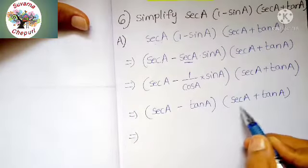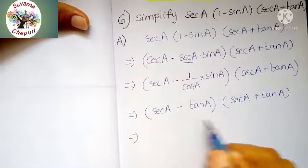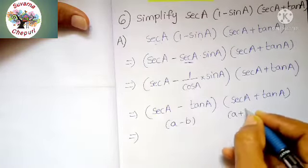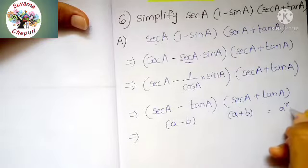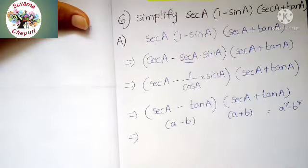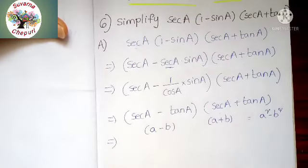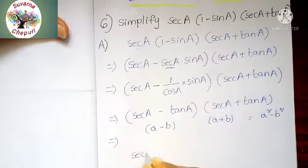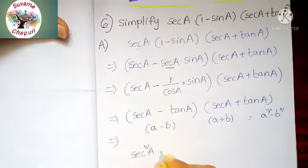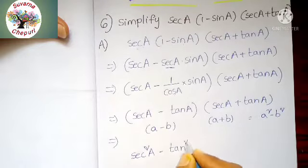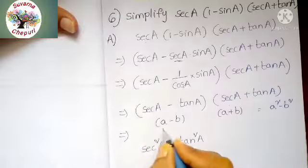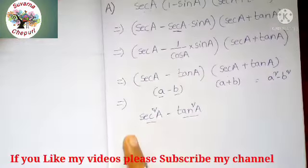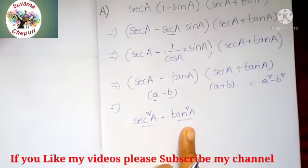Secant A minus tan A, into secant A plus tan A. It is in the form of A minus B into A plus B. The answer is A squared minus B squared. So by using that formula, write secant squared A minus tan squared A. Here A means secant A and B means tan A.